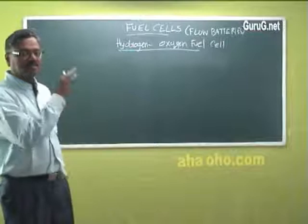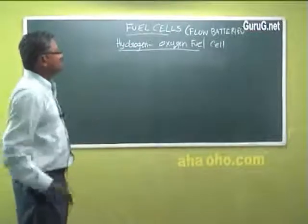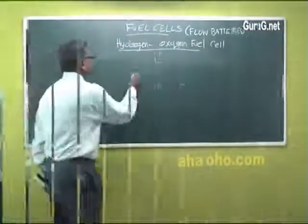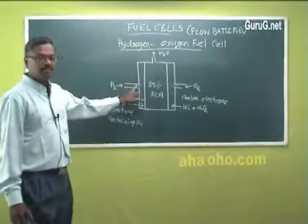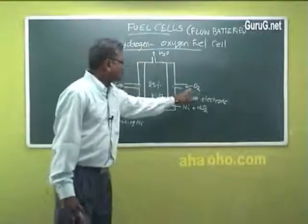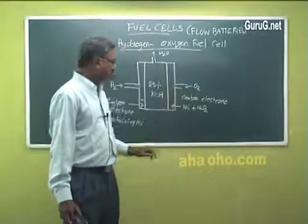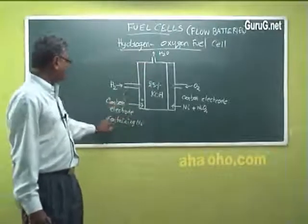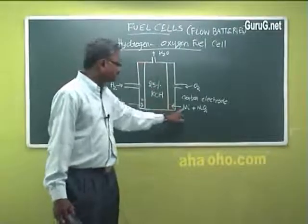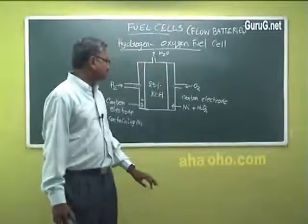Let me explain the important parts of hydrogen oxygen fuel cells. Here hydrogen is sent inside which is a fuel. Here oxidant oxygen is sent. We have two electrodes. This is a carbon electrode containing nickel. This is again a carbon electrode containing nickel and some amount of nickel oxide.